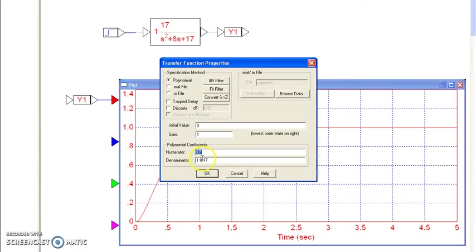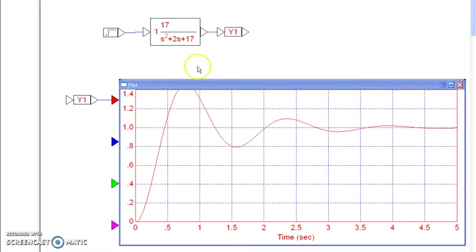The complex part of the pole tells you the frequency of oscillation. Here, this has a pole at minus 1 plus j4. This oscillation, this frequency, is 4 radians per second. The period is 1.6 seconds. If you use your calculator, 2 pi over 1.6 is 4.